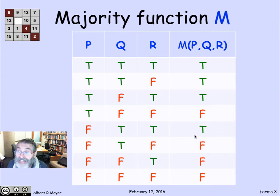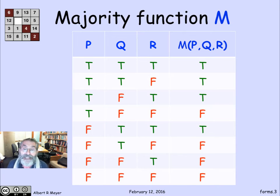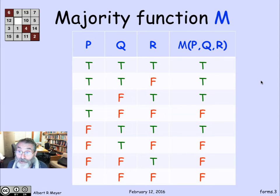Let's begin with a truth table of a function that may or may not be familiar, but it's called the majority function of three variables p, q, and r. As long as there are more trues than falses, this is going to come out to be true. For example, if there's two trues and one false it's true, but if there's two falses and one true it's false, and so on for the other rows of the truth table.